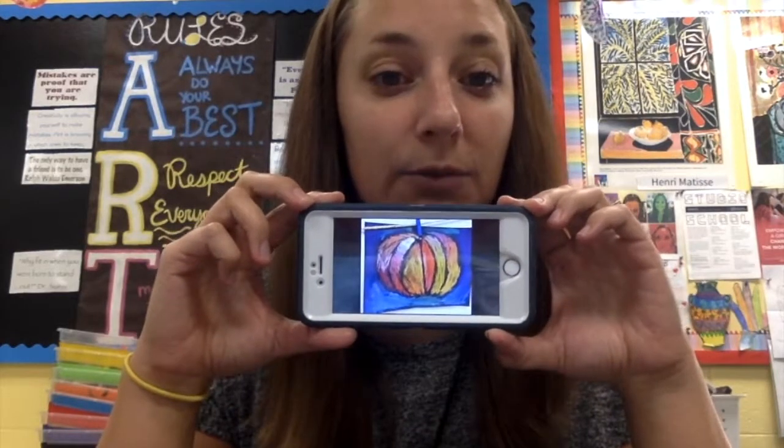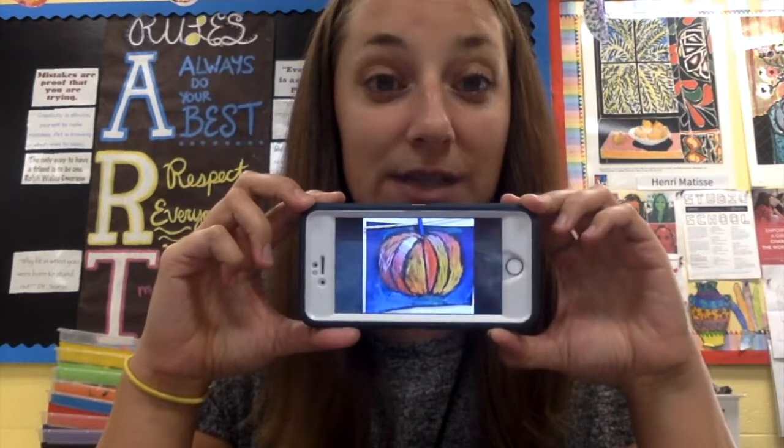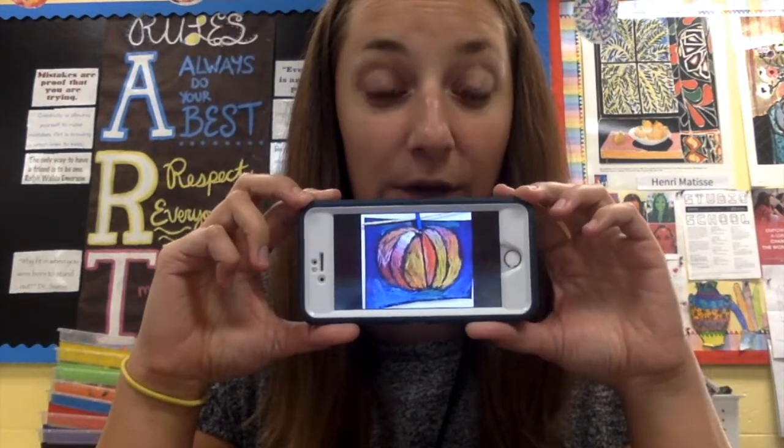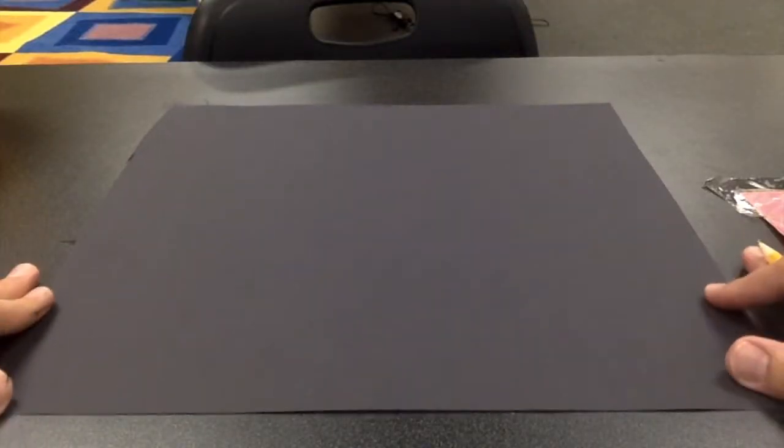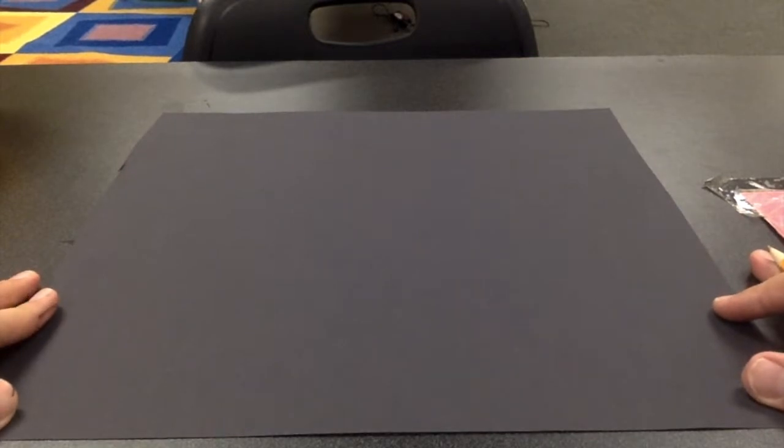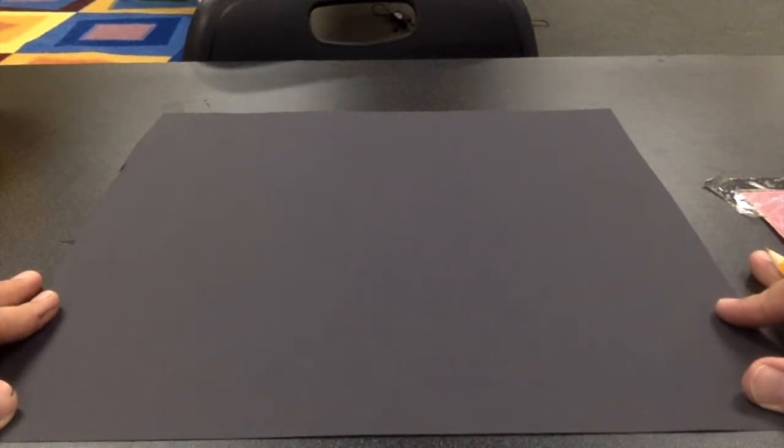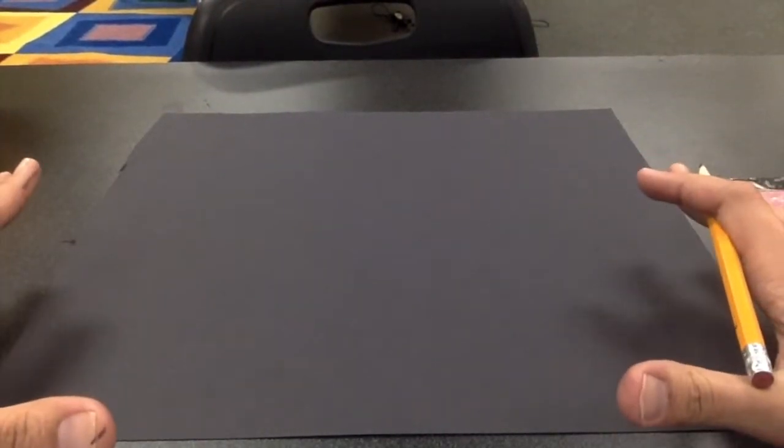We're going to be creating a pumpkin with oil pastels in just a minute. Now it is time to draw our pumpkin. You may think it's kind of hard to draw a pumpkin, but I'm going to show you a very easy way. We want to draw it big to cover up this big square sheet of paper, so everyone show me your hands, big big pumpkins.